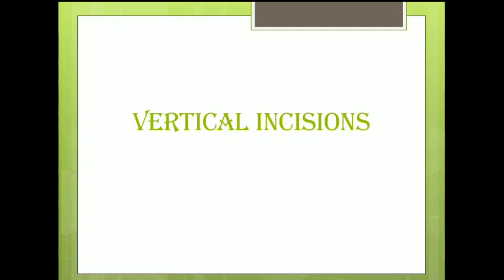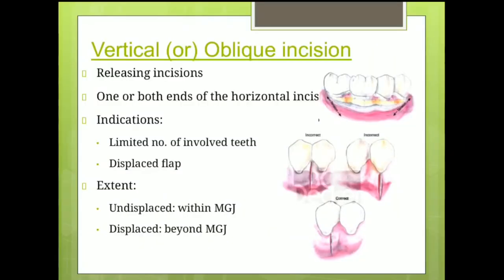Then come the vertical incisions. A vertical incision is also known as an oblique or releasing incision, as it is given at the end or edges of horizontal incisions. These incisions are indicated in cases where we want to limit the number of teeth involved. For example, if the area of surgical interest is in relation to the premolars and molars and we give releasing incisions, we can limit the flap only to that region. Without vertical incisions, to raise a flap with sufficient accessibility, we might have to extend the horizontal incisions to at least one to two teeth on either side, otherwise stretching the flap during reflection or elevation might tear it at the edges.